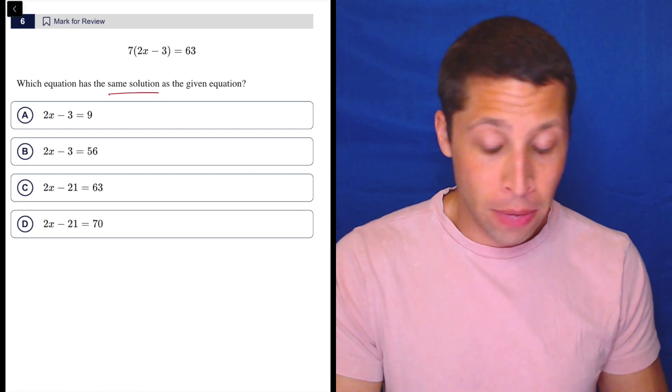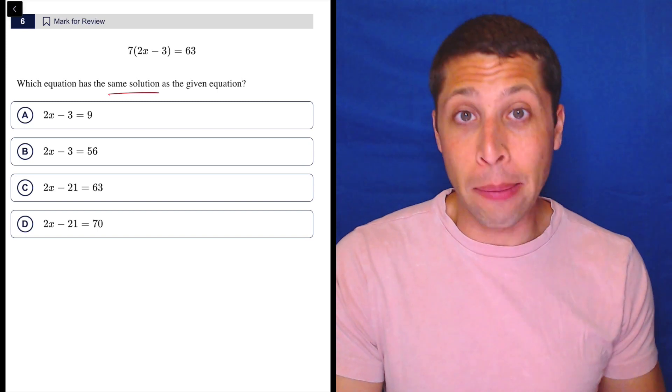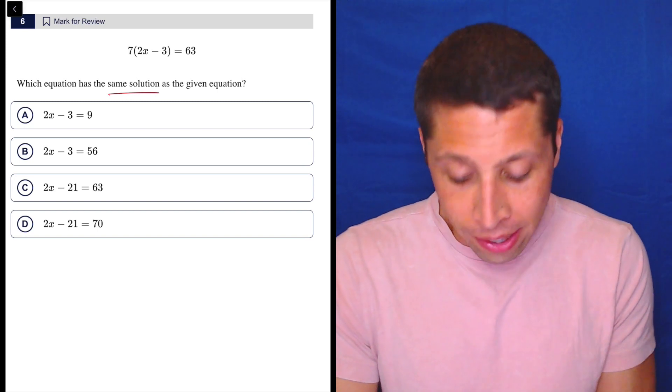Basically what you're supposed to see here, that is if we need the same solution, basically it's kind of like the same equation. So what we could do is noticing that 2x minus 3 is kind of two of the choices as well helps. Just divide by 7.